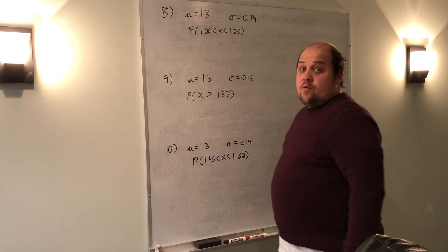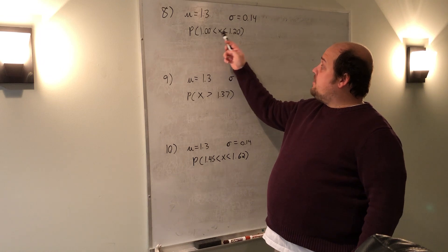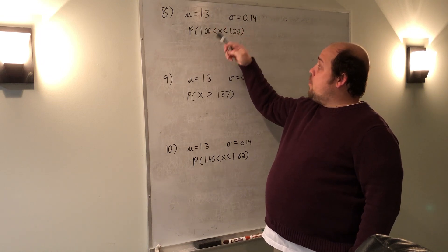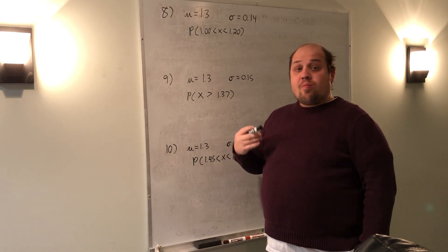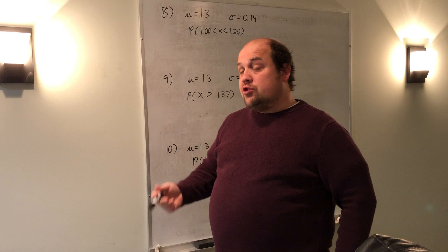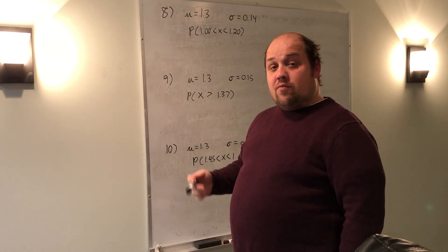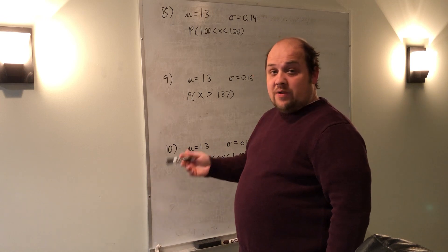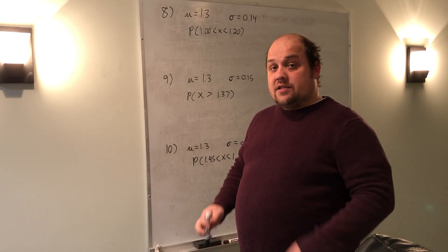Now moving on to a section where we have to make three moves. We have to start with x values, use the z-score formula to translate them into z-scores. Once we get those z-scores, we need to use the table to translate them into p-values. Once we have those p-values, we need to recognize: do we need to do one minus? Do we need to take larger minus smaller? How do we get to a final probability answer?